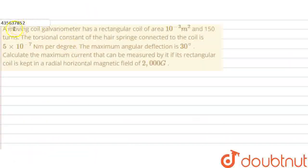Hello friends, we have a question. We are asked that a moving coil galvanometer has a rectangular coil with 150 turns. The torsional constant of the spring connected to the coil is 5×10^-7 Nm per degree.